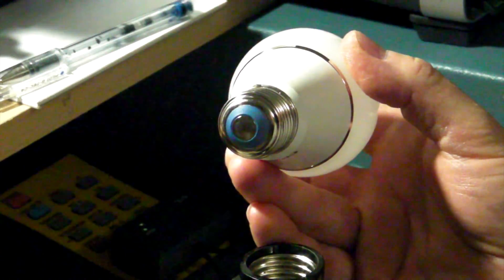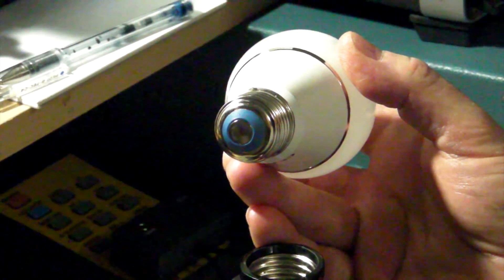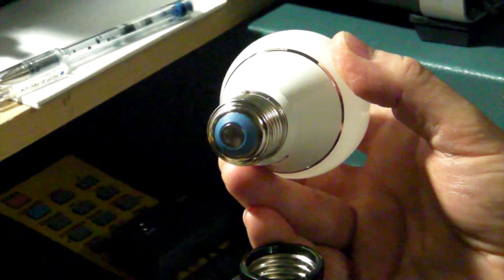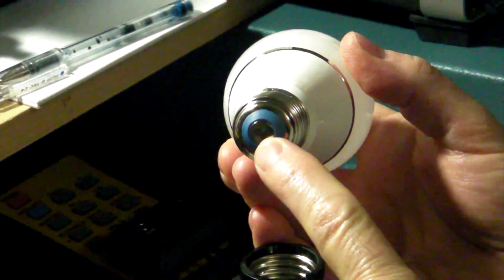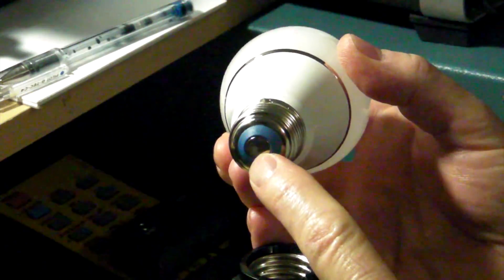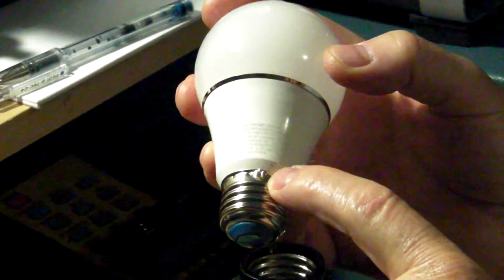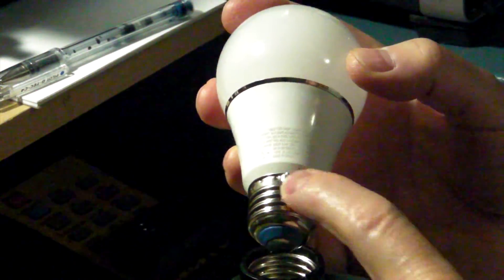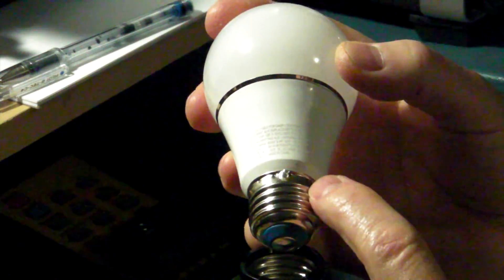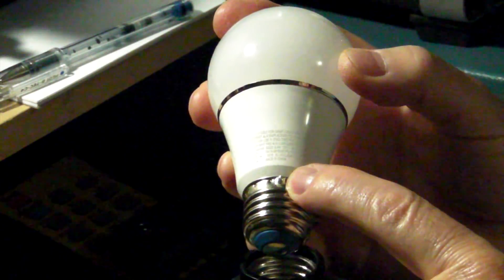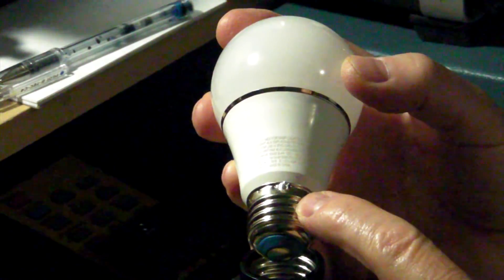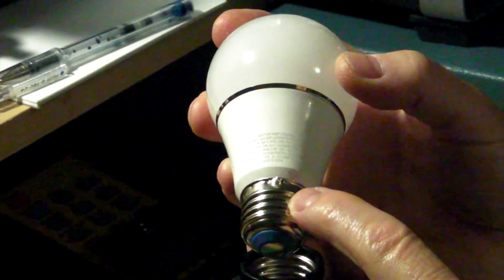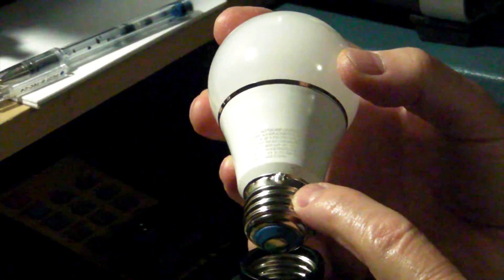Cree has also addressed some of the major problems with their original series. The base contact is no longer soldered. And the wire for the shell, the screw contact, is also soldered now instead of just being crimped inside between the plastic and the metal, which was the big failure point on the original series.